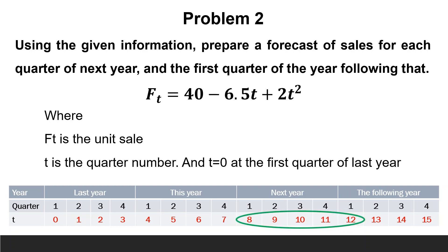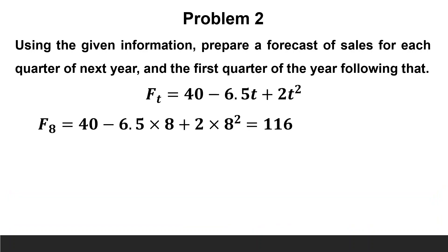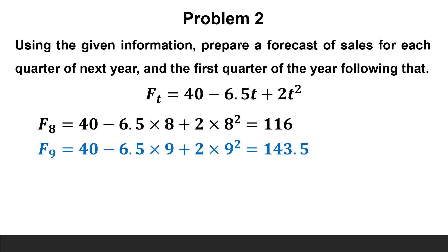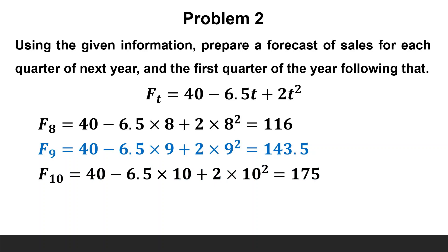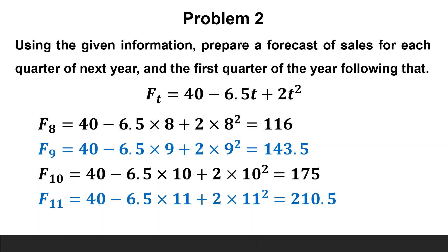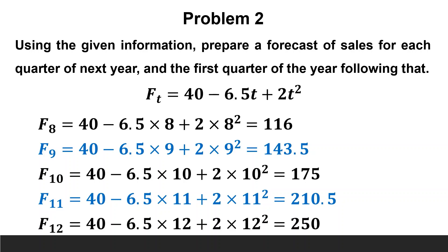Substitute these values of t in the given trend equation. F8 equals 40 minus 6.5 times 8 plus 2 times 8 squared, equals 116. F9 equals 40 minus 6.5 times 9 plus 2 times 9 squared, equals 143.5. F10 equals 40 minus 6.5 times 10 plus 2 times 10 squared, equals 175. F11 equals 40 minus 6.5 times 11 plus 2 times 11 squared, equals 210.5. F12 equals 40 minus 6.5 times 12 plus 2 times 12 squared, equals 250.